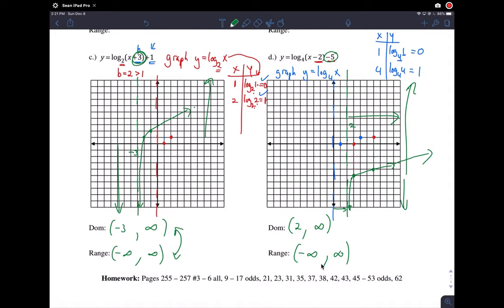So remember for exponentials the domain is always negative infinity to infinity and for logarithms the range is always negative infinity to infinity and its domain is restricted. So that's basically that, it's very similar to exponentials except these are inverses so things are switched around, the x and y values are switched around.